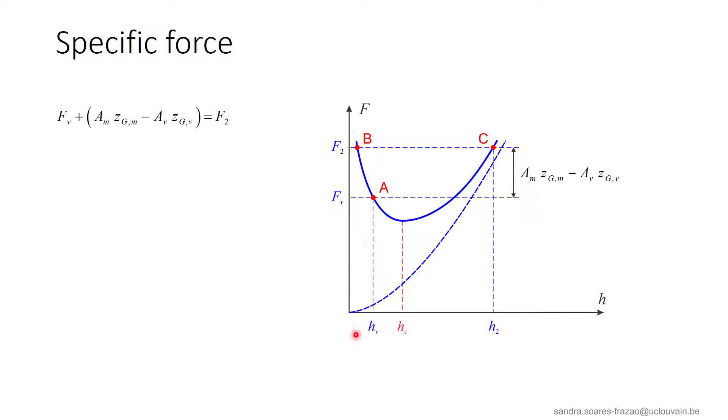Point B would correspond to water depth H2 smaller than the water depth HV, which is in contradiction with the assumption of a hydraulic jump in which the sequence depth H2 is larger than HC. So we have point C, with H2 above HC. This confirms that the water profile that starts downstream of a hydraulic jump is subcritical.